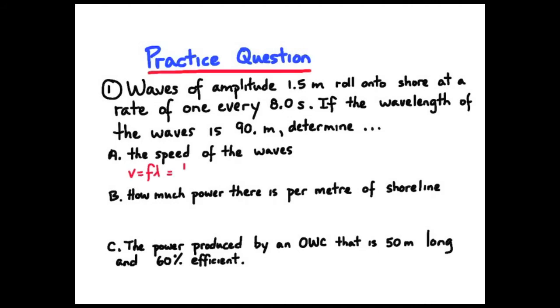Speed of a wave is just a product of frequency and wavelength. And, of course, frequency is 1 over the period. And so we have all this information. The period is 8 seconds, and we substitute it in and solve, and we get about 11 meters per second for the wave speed.